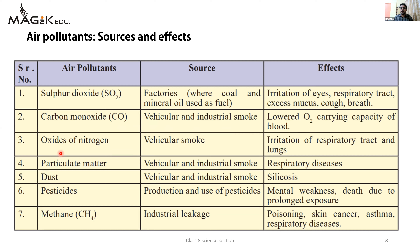Third air pollutant is oxides of nitrogen. Oxides of nitrogen ka source hai vehicular smoke. Iska effect - irritation of respiratory tract and lungs, respiratory problems cause kar sakta hai. Particulate matter - source: vehicular and industrial smoke - causes respiratory diseases. Dust - source: vehicular and industrial smoke - causes silicosis. Silicosis ek disease hai - agar humein silicon ya silicon crystals inhale karte hain to woh hamaare lungs ko damage kar deta hai.